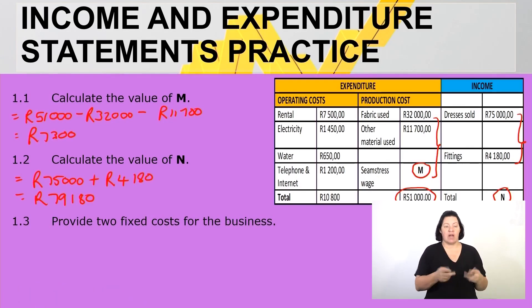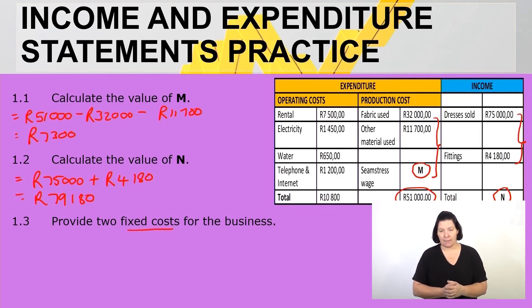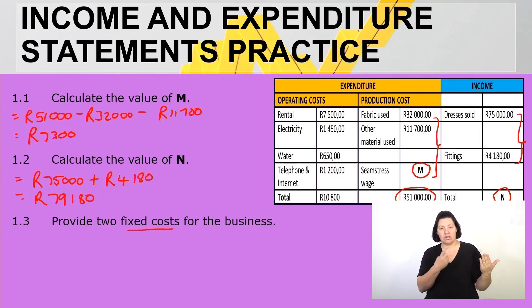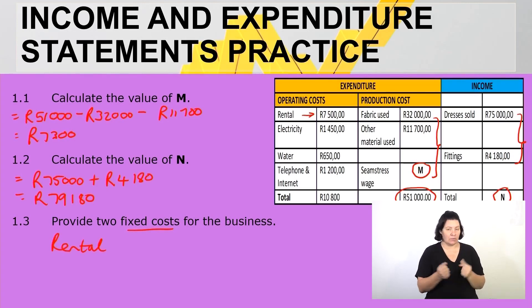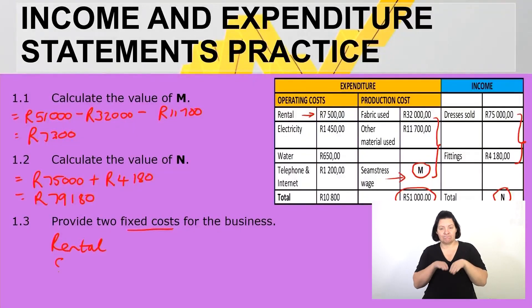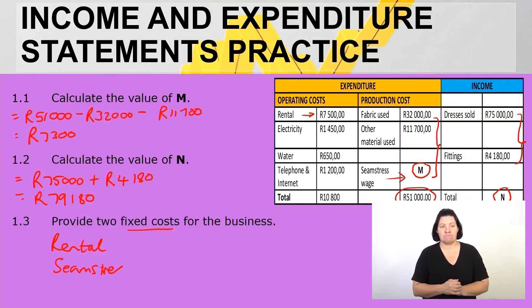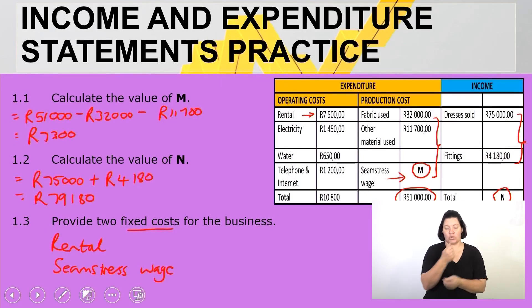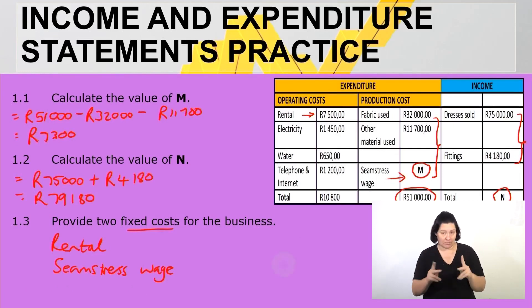Question 1.3 asks for two fixed costs for this business. Fixed costs are the same amount on a month-to-month basis. The two fixed costs are rental and the seamstress wage.